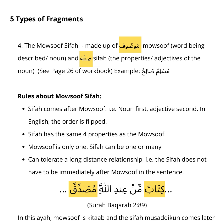The fourth fragment is Mawsuf Sifa, which is made up of Mawsuf — the word being described, or the noun — and Sifa, which is the properties or adjectives of the noun. They are on page 26 of the workbook. Example: Muslimun Saalihun. Sifa comes after Mawsuf — that is, noun comes first and adjectives second, which is the opposite order from English. Sifa has four properties, which are the same as the Mawsuf. Mawsuf can be only one, whereas Sifa could be many. There could be a long-distance relationship — that is, a Sifa does not have to be immediately after Mawsuf in the sentence.